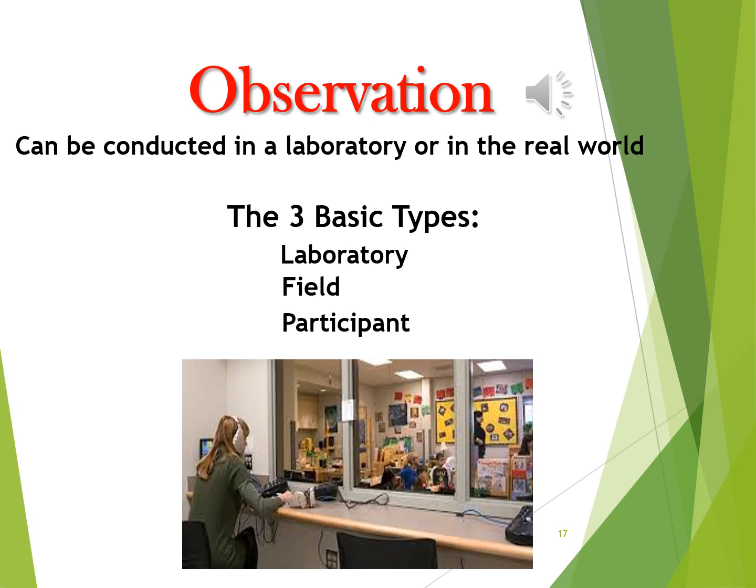Let's now consider observation as a research method — basically just like it sounds, you're observing and carefully recording data. It can be conducted in the laboratory or the real world. There are three basic types: laboratory observation done in the researcher's lab; field observation where you go out into the real world; and participant observation where you actually join in with the group — for example, dressing and living as the Amish for a period of time. Laboratory and field are much more common than participant observation.